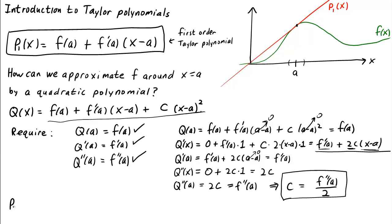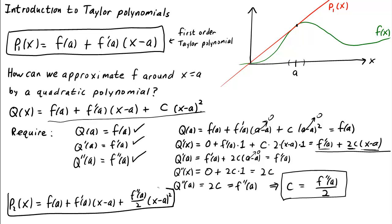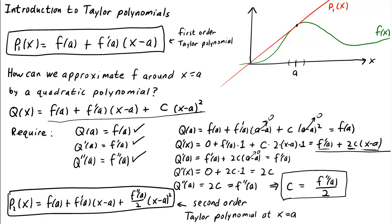So what we have derived is the second order Taylor polynomial, which we write as p sub 2 of x. p sub 2 of x equals f of a plus f prime of a times x minus a plus f double prime of a over 2 times x minus a squared. This is the second order Taylor polynomial to f of x at x equals a — or a quadratic approximation. The graph of p sub 2 is an even better approximation to f of x in the neighborhood of a, though of course it does a terrible job as you get further and further away from x equals a.